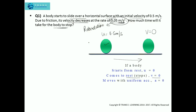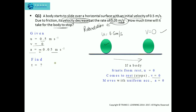Let us write what is given and what needs to be found. The initial velocity U is 0.5 meter per second, the final velocity V is 0, and the acceleration is −0.05 meter per second squared — negative because the velocity is decreasing. We need to find the time. Note: a common mistake is confusing uniform acceleration with uniform velocity. A body moves with uniform velocity when acceleration is 0, meaning initial and final velocities are the same. That is not the case here.